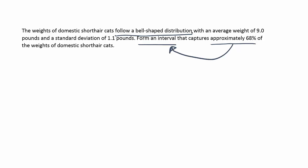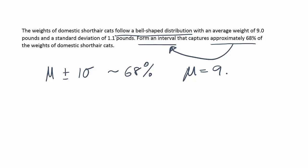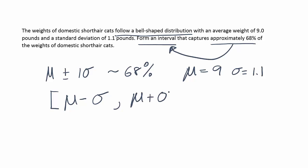So we can use the empirical rule to solve this. All we have to do is take the mean, add one standard deviation to it, and take one away from it, and that will give us the interval we're looking for. The empirical rule says that the mean plus and minus one standard deviation captures approximately 68% of the data. The mean from the problem is 9.0 pounds and the standard deviation is 1.1 pounds. So the interval is the mean minus one standard deviation to the mean plus one standard deviation, which should capture approximately 68% of the data.